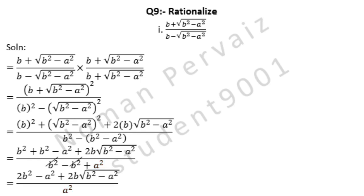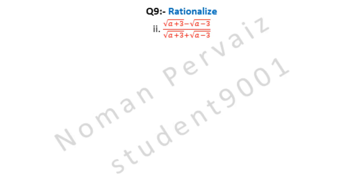Next we will solve part 2 of question number 9. So stay with us. Question number 9 is: rationalize. Part 2 is: under root A plus 3, minus under root A minus 3, divided by under root A plus 3, plus under root A minus 3.